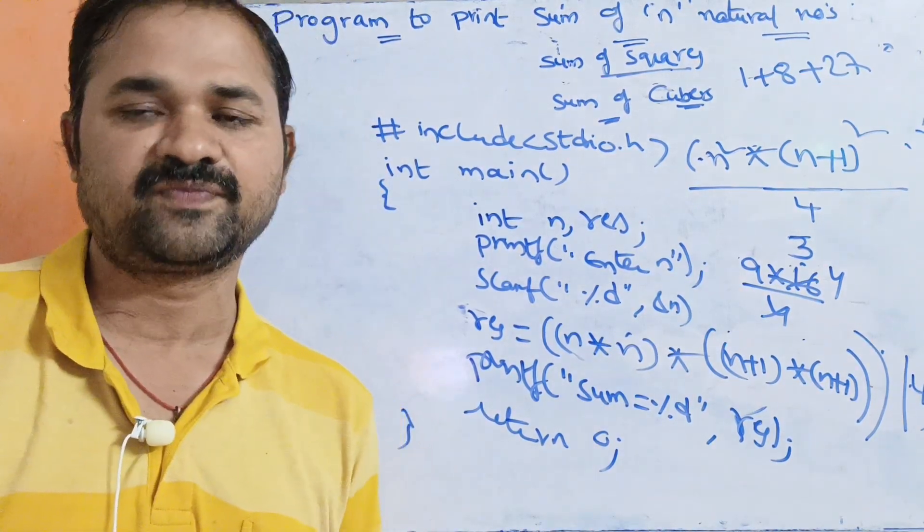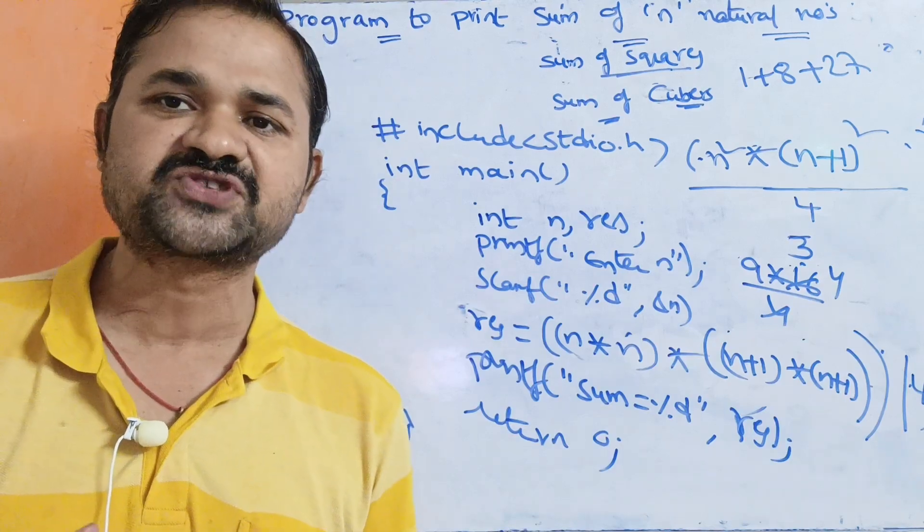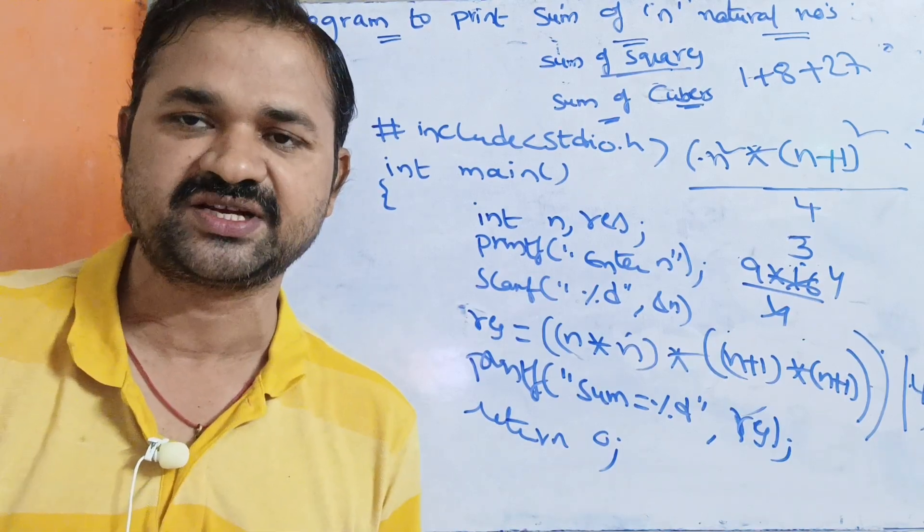In this way, in C program we can print sum of n natural numbers, sum of squares of n natural numbers, sum of cubes of n natural numbers.